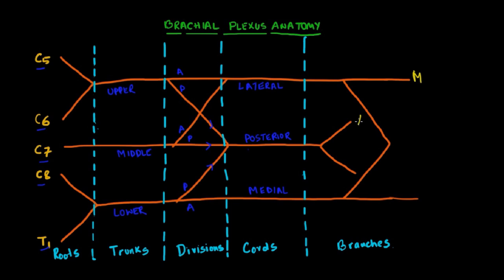And at the end of the branches, I want you to write down M-A-R-M-U or MARMU. These are the five terminal branches of the brachial plexus and I will come back to them later on.